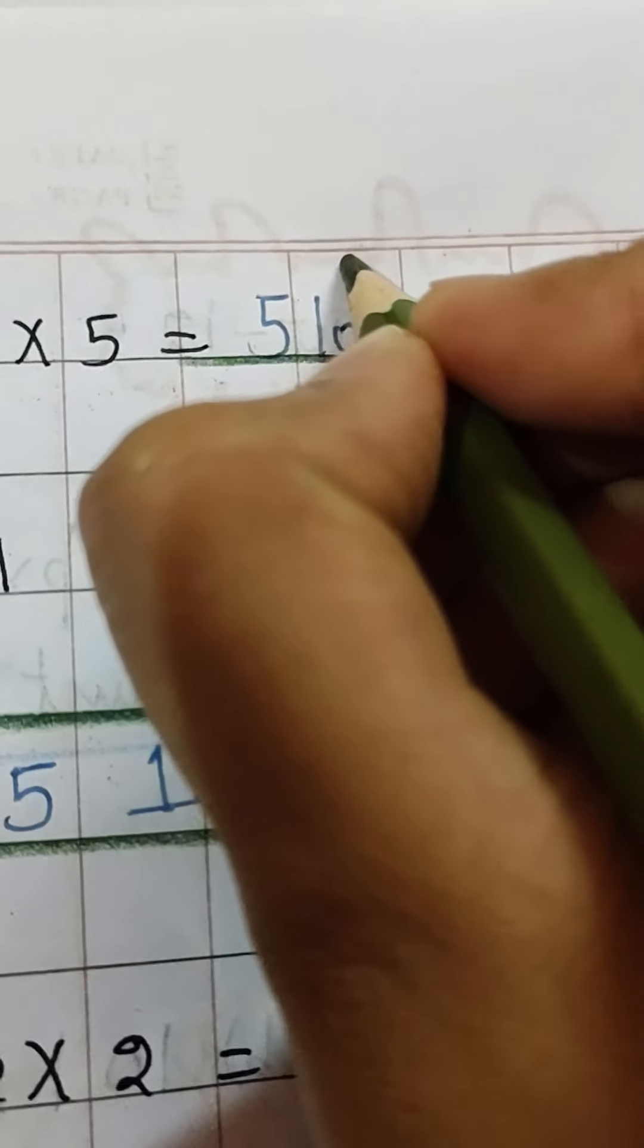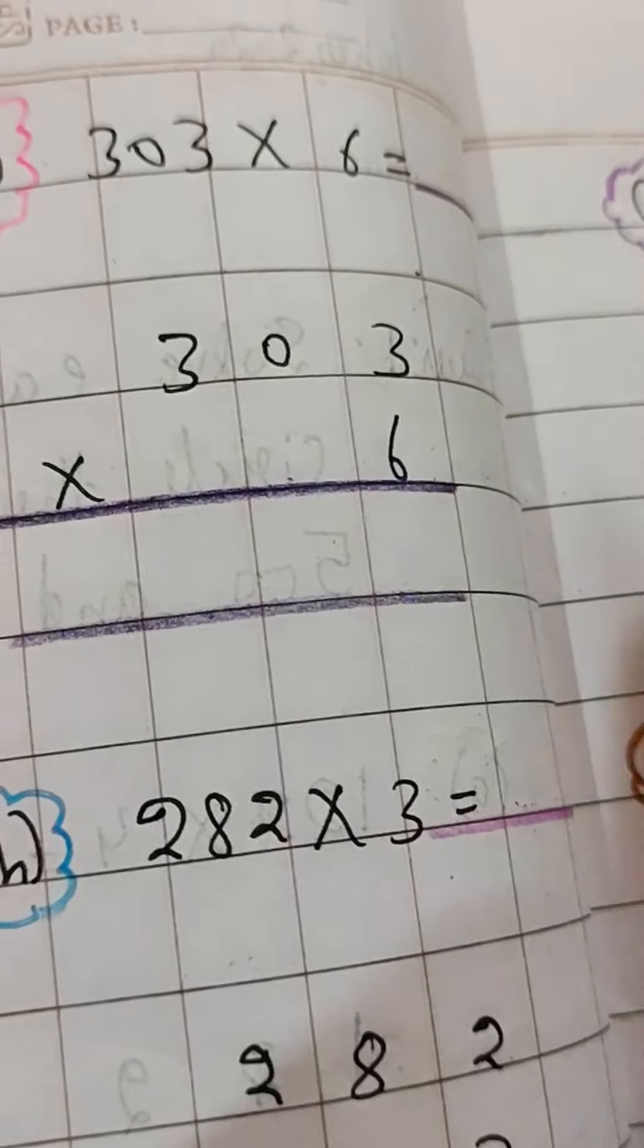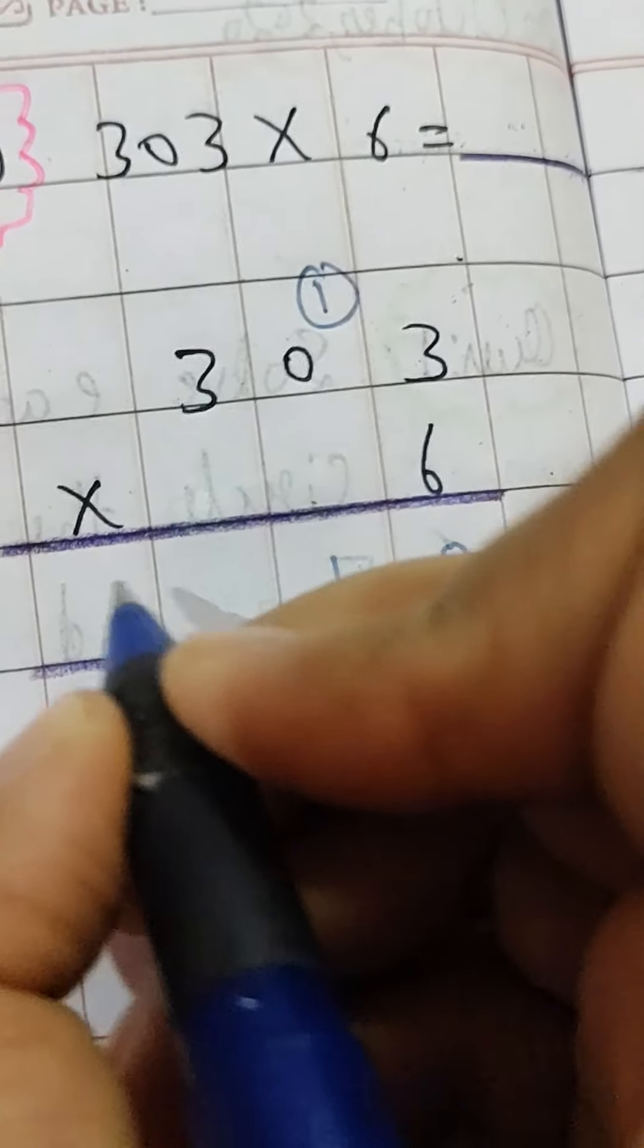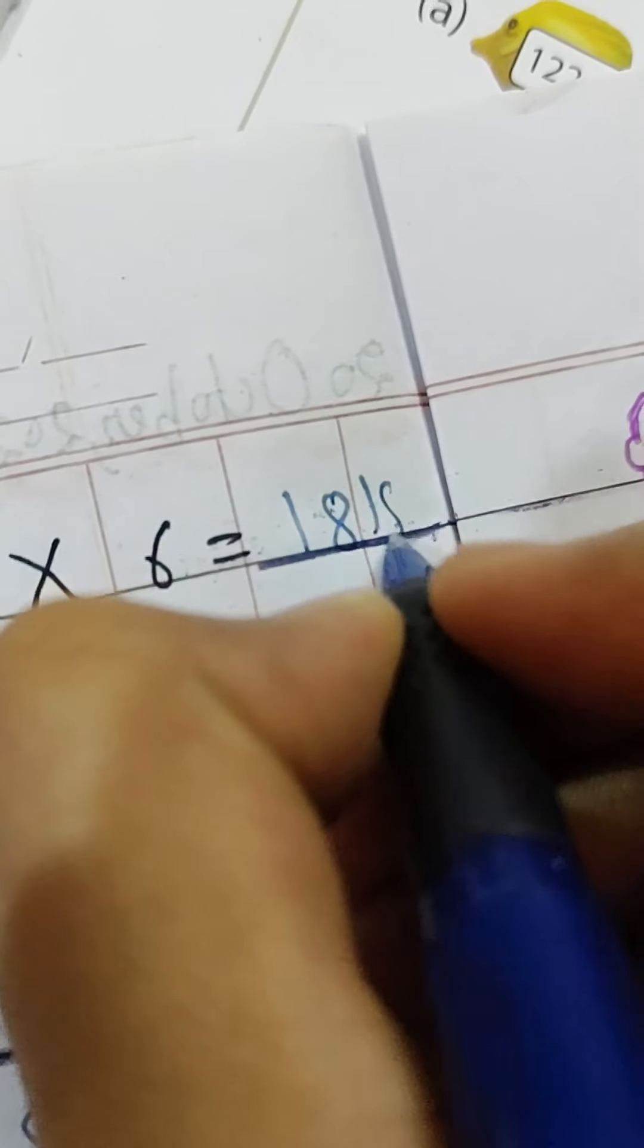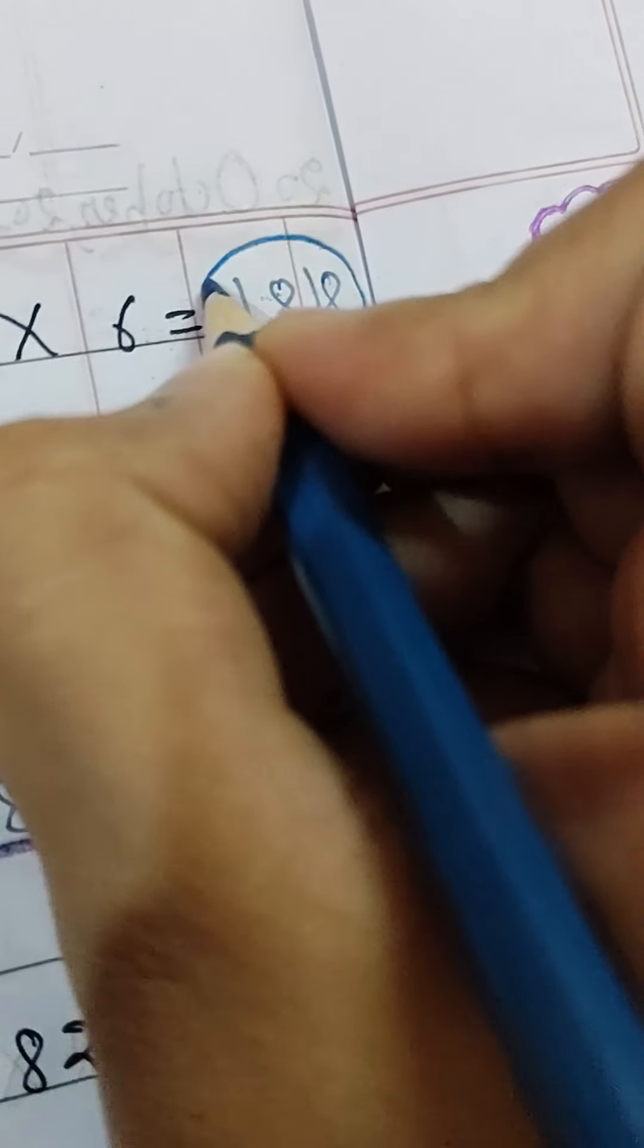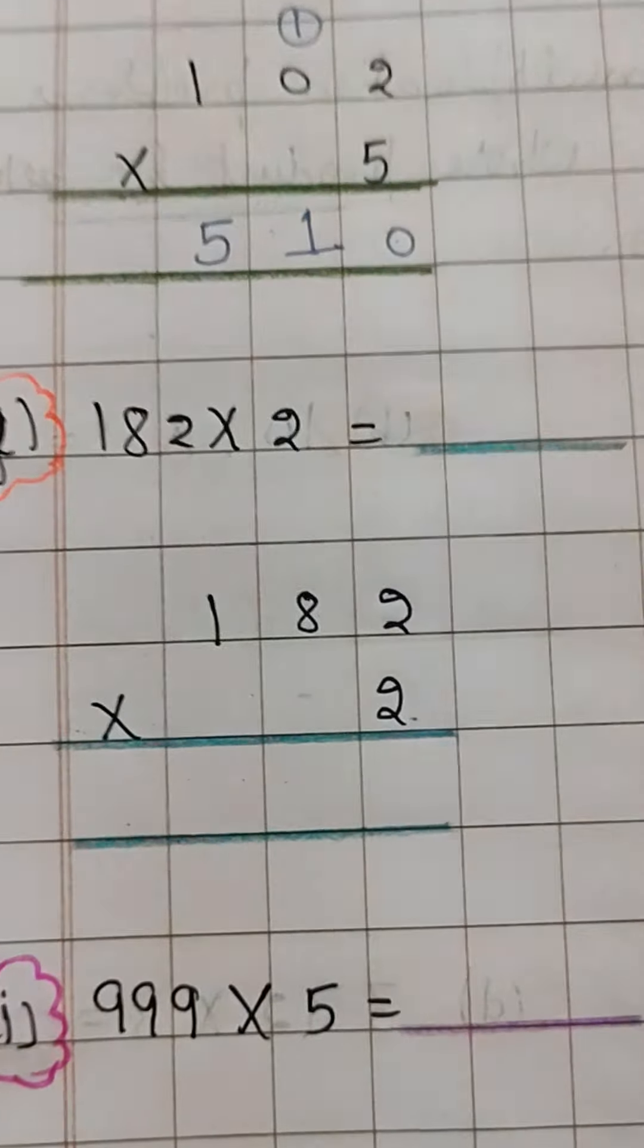Then you can multiply this: 6 times 3 is 18, 8 here, 1 here, 6 times 0 is 0 plus 1 is 1, 6 times 3 is 18 again. So this is 1818. 1818 also comes in between 500 to 3000, so you will circle this one also.